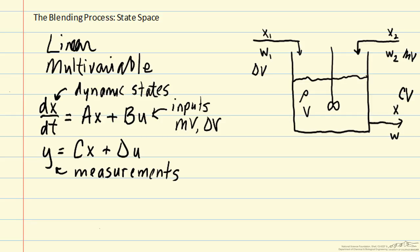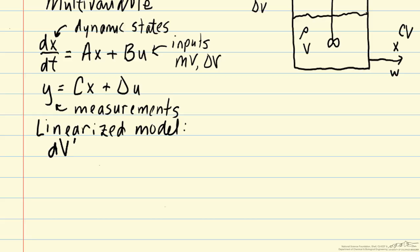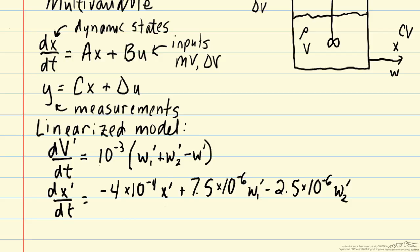Now in previous videos we had already written down a linearized model for the blending process. That is the model that we will use that we will rewrite here. First we considered the change in the volume in the tank, and these are all in deviation variables. And then our second equation was for the mass fraction of species A in the tank. So this is our multivariable dynamic model for the blending process.